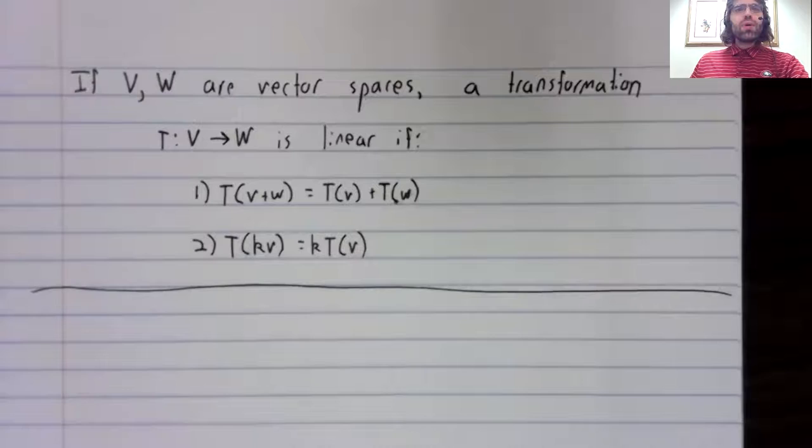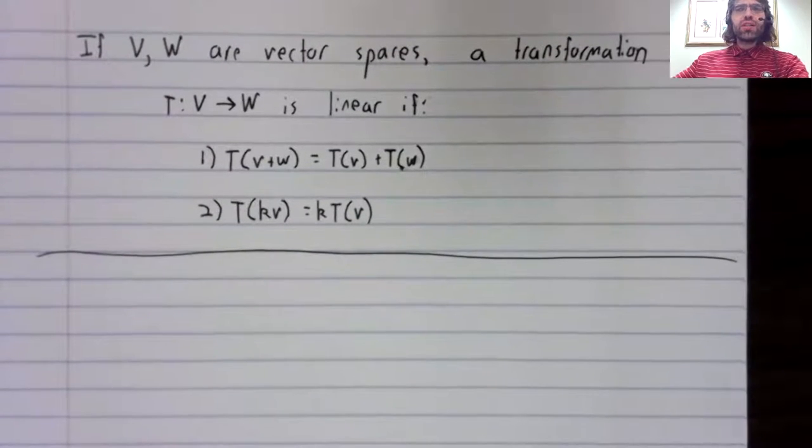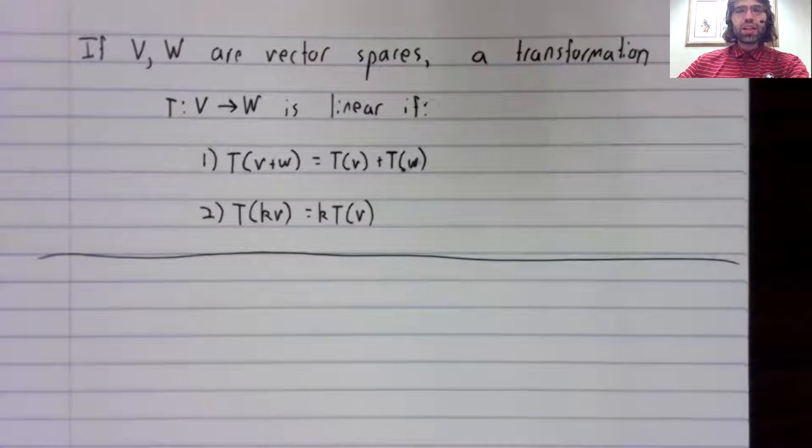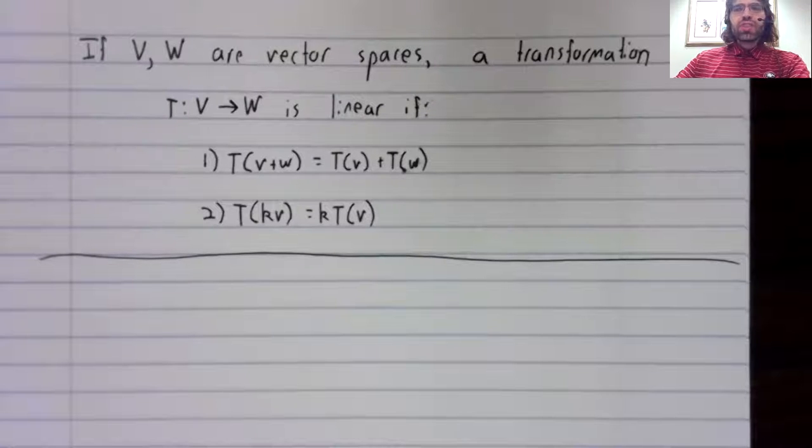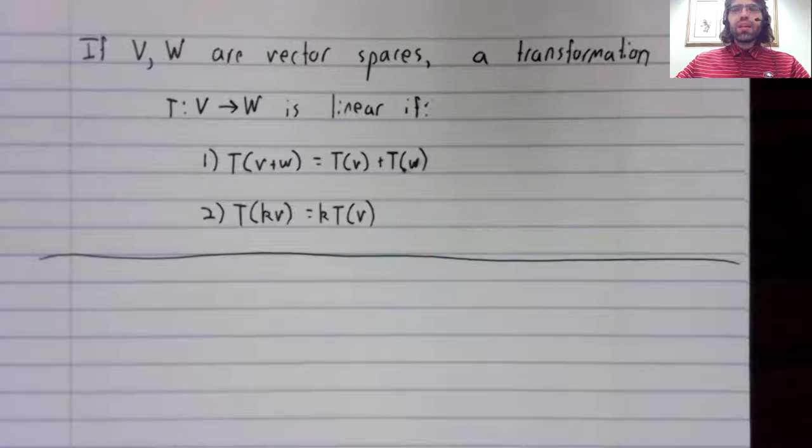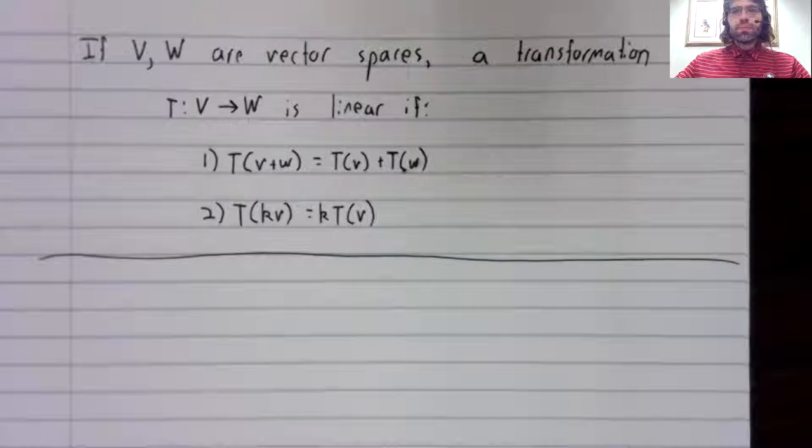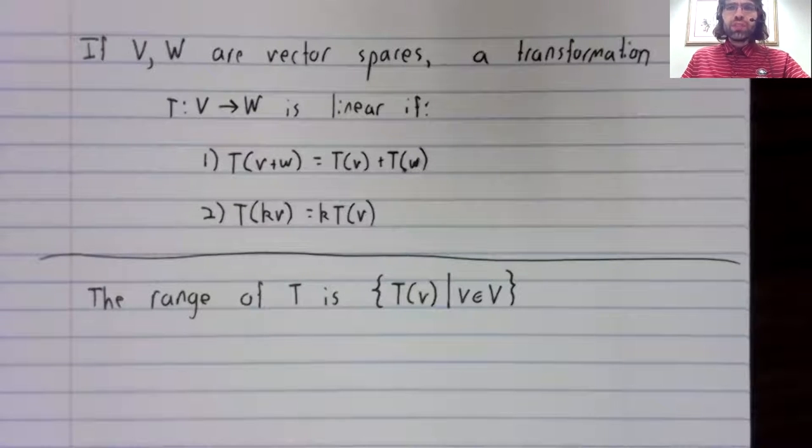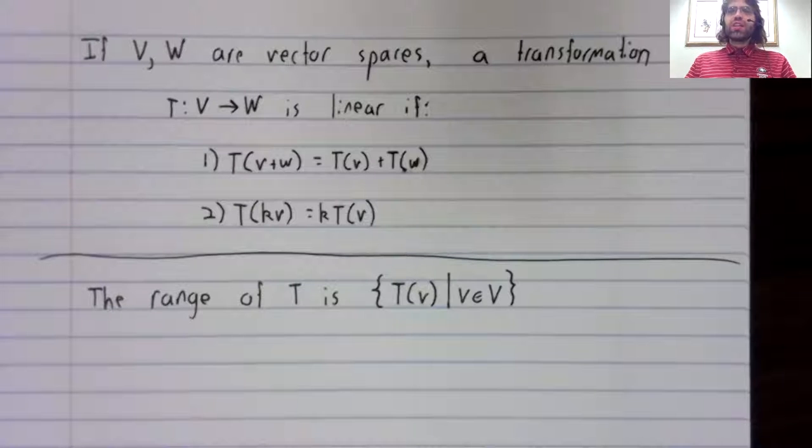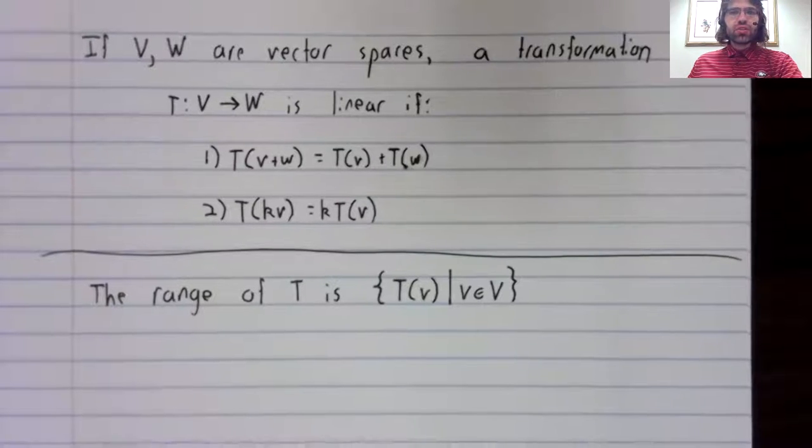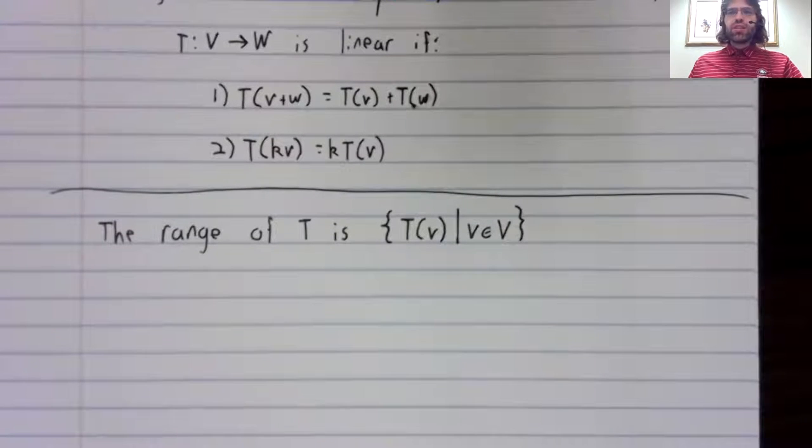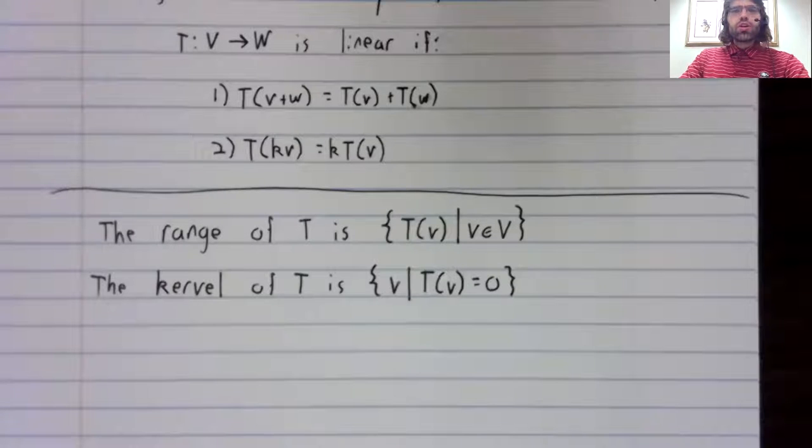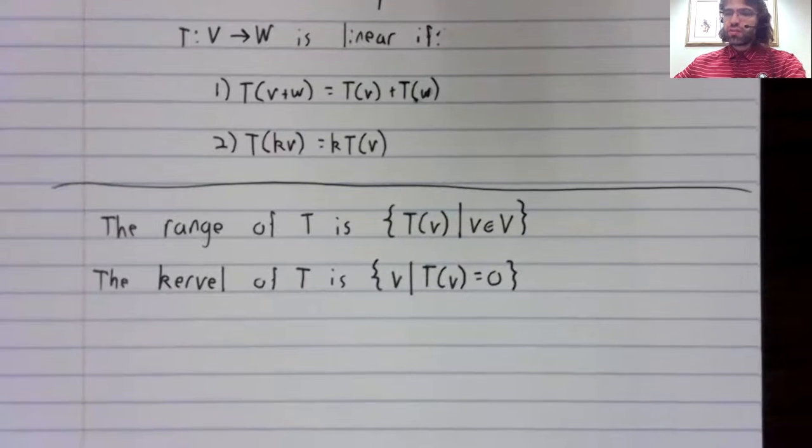We do have a genuinely new definition now. The book presents two definitions, but one of them is older. We defined the range last time we talked about linear transformations, and nothing about this definition has changed. Here is a genuinely new definition: the kernel of the linear transformation.